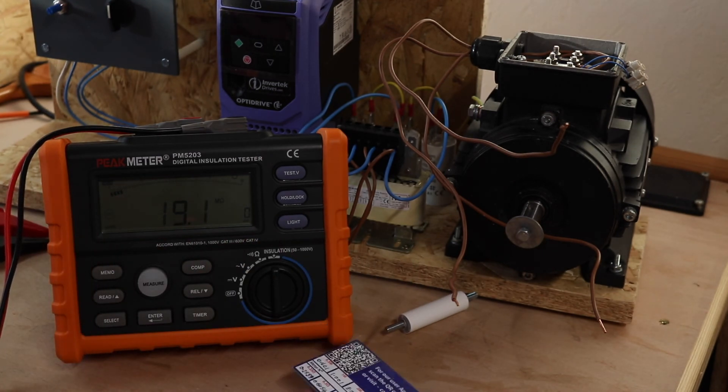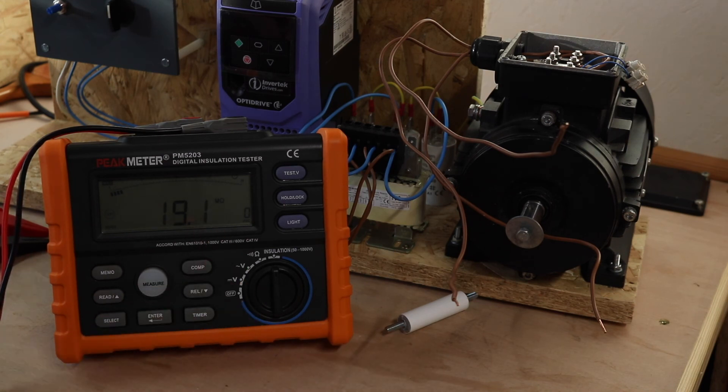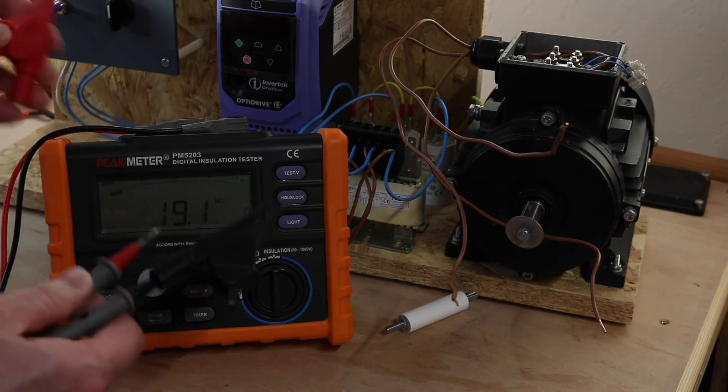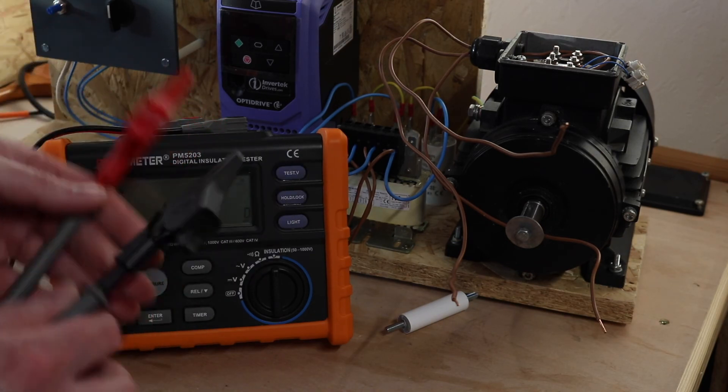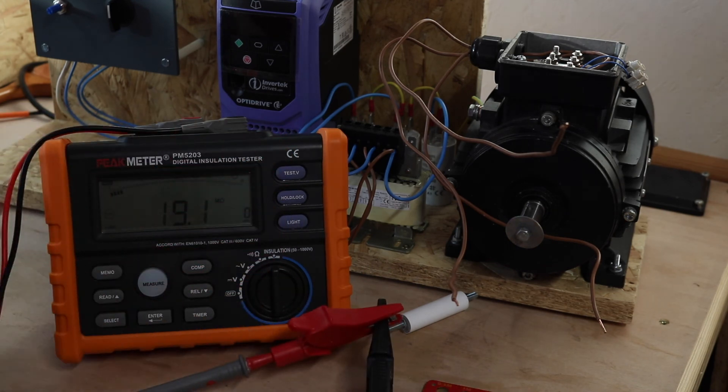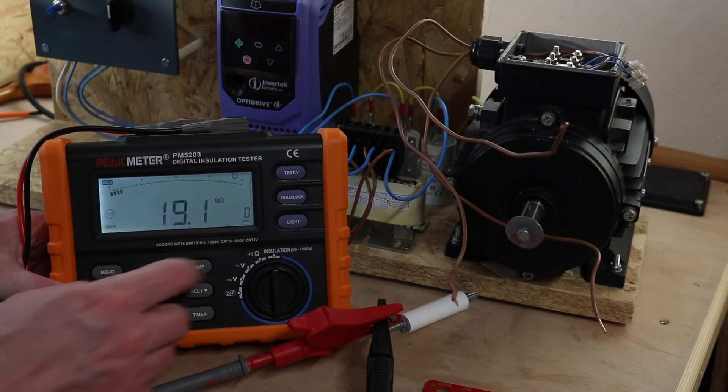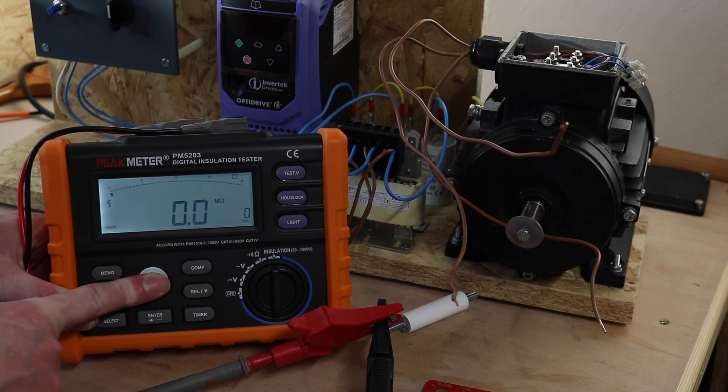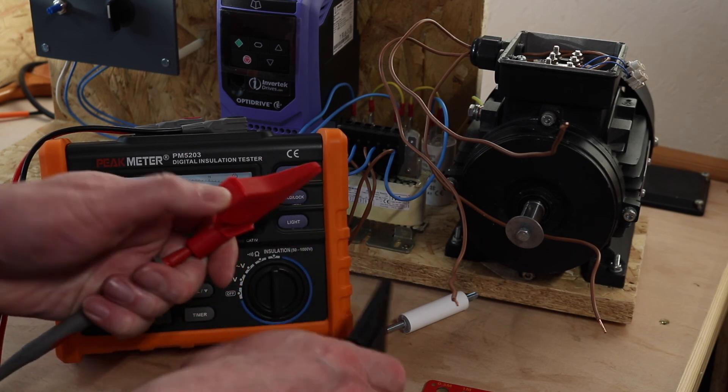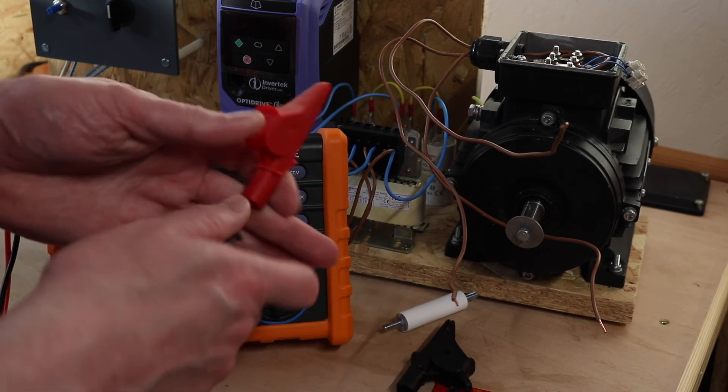And finally, the other check you can do with your insulation test to see if it's working okay is basically just short your leads out and you should get a zero reading on your instrument. And then you see zero there.